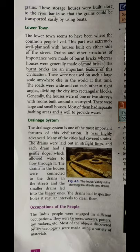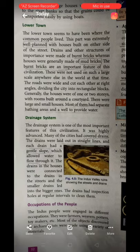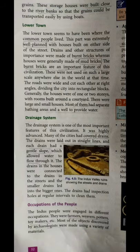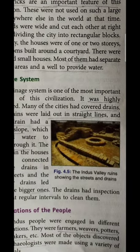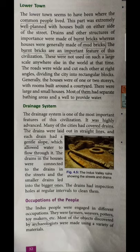Each and everything that a town needs was available in the Lower Town. Every house required a drainage system, and the people of the Indus Valley Civilization also had this kind of highly advanced drainage system. Water pipes were connected to the houses and waste water was drained out with the help of these pipes. There is a picture showing streets and drains of the Indus Valley Civilization. Drains had inspection holes at regular rectangular intervals to clean them.